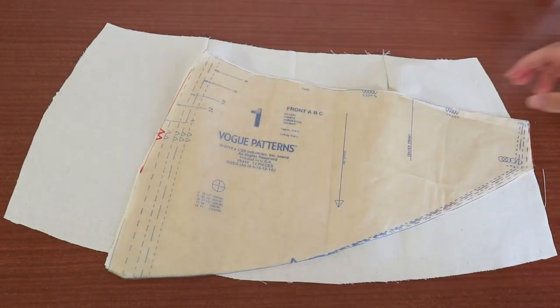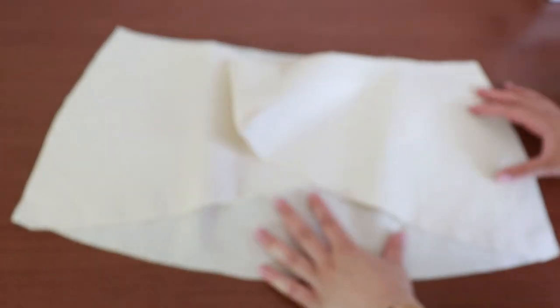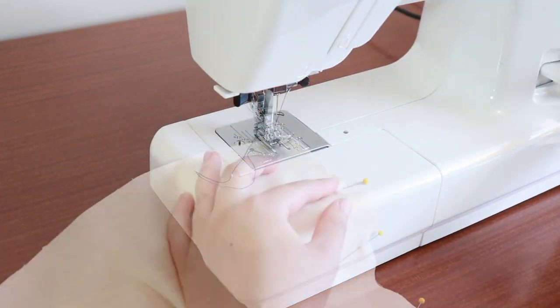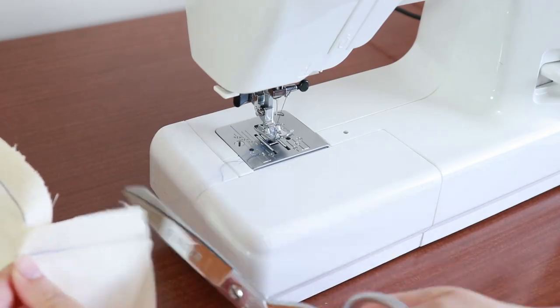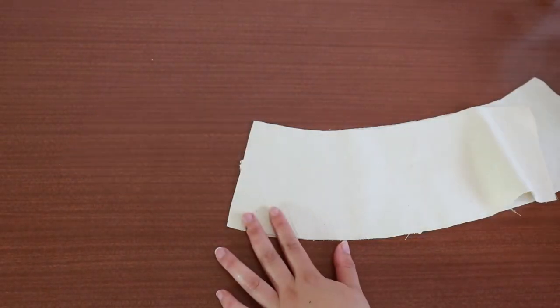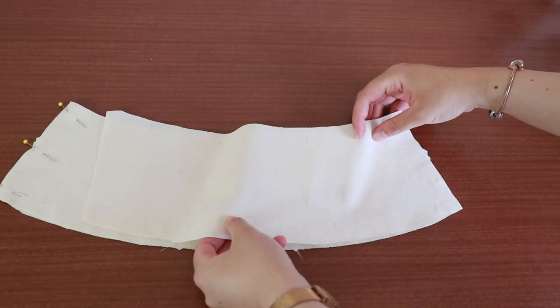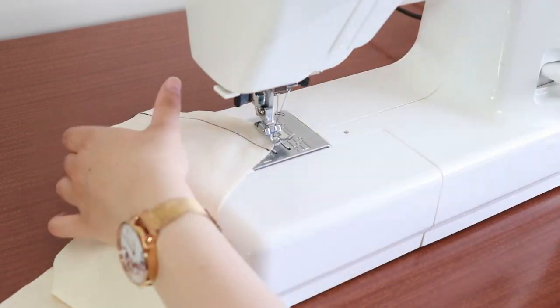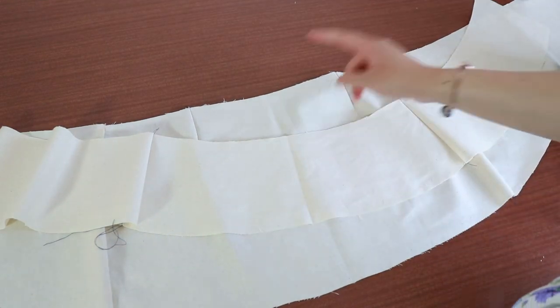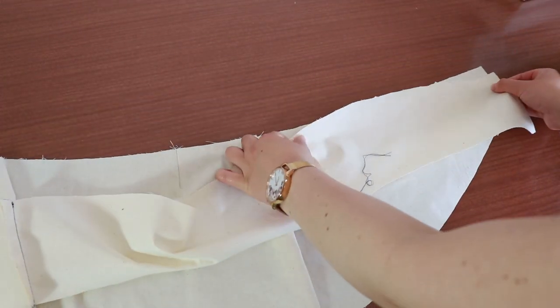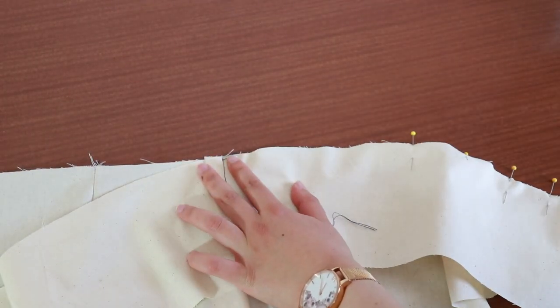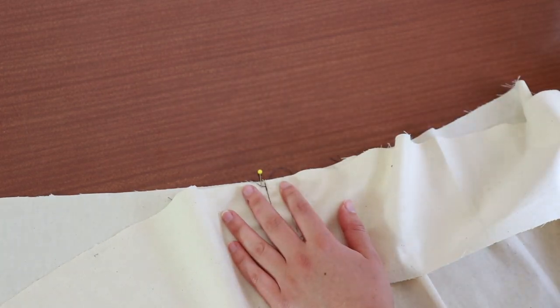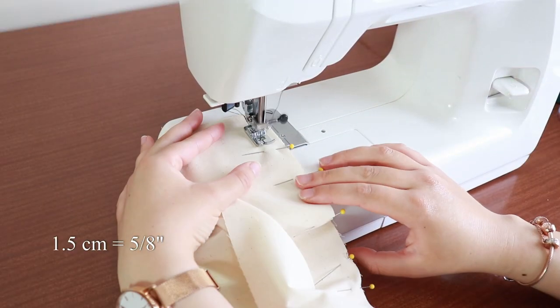Grab both copies of piece 1. Pin both of these copies right side together on top of piece 2. Match the double notch. Sew them right sides together at 1.5 cm. Pin the waistband to the skirt with the right sides together. Match the side seams. Sew these pieces together at 1.5 cm.